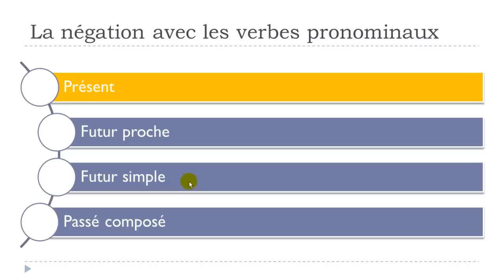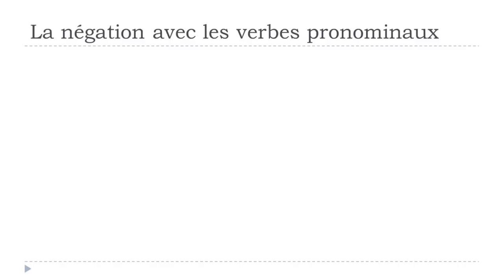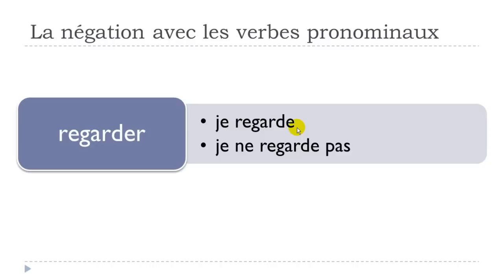We will see first LE PRÉSENT, then LE FUTUR PROCHE, then LE FUTUR SIMPLE, and then LE PASSÉ COMPOSÉ for this first part. So at the present form, REGARDER will be JE REGARDE. And if you put the negative form, it's quite simple: JE NE before the verb, and after that PAS. So you've got the negative form here: JE NE REGARDE PAS.